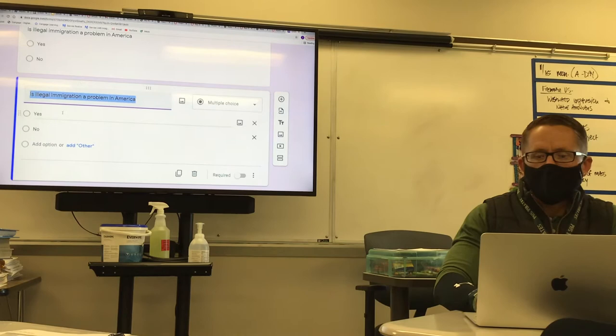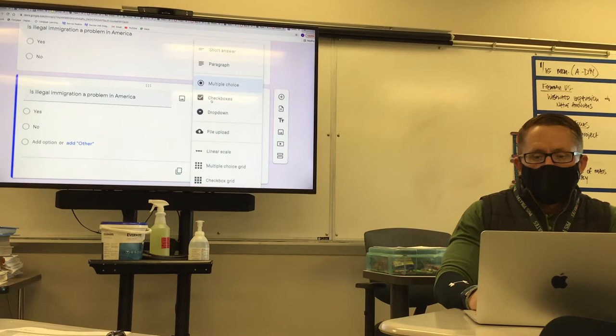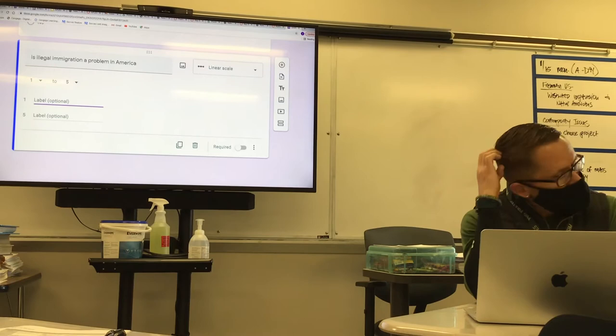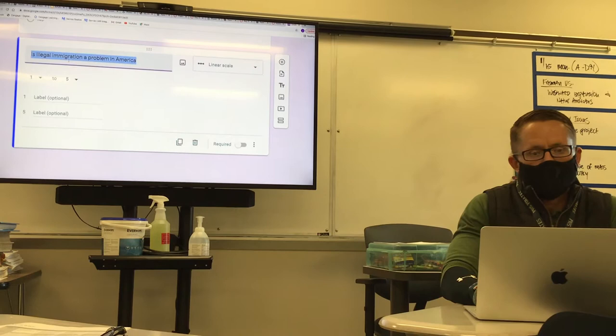Now I do want to give you guys an example of a rating scale. So if you just click the drop-down menu, you can go to linear scale. It's going to have you label, so like what is a one, what is a five. So in this particular example, if we're going with immigration, we probably need to change the question. Is illegal immigration a problem here in America? How could we reword this into a linear scale?